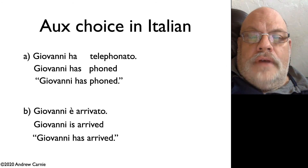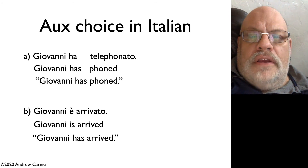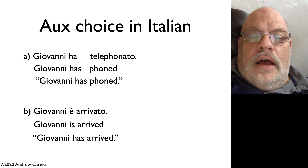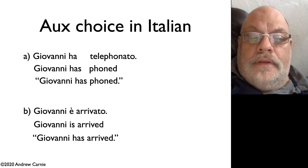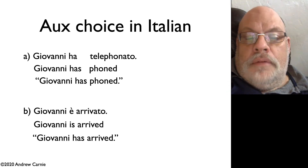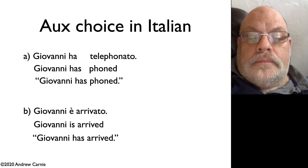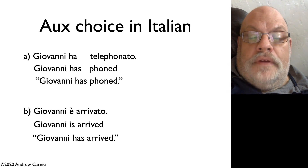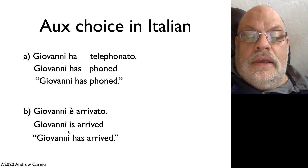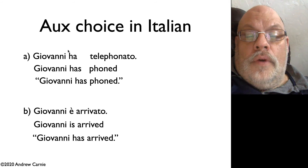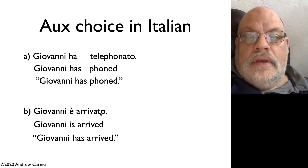There's actually lots of evidence for the phenomenon of unaccusativity across the world's languages. In many languages, unergative verbs take have-type auxiliaries in the perfect, and unaccusative verbs take be-type auxiliaries in the perfect. Here's an example from Italian: we have be as the auxiliary with arrived, and have with telephoned. Telephoned is an unergative and arrived is an unaccusative.